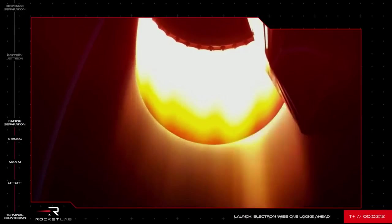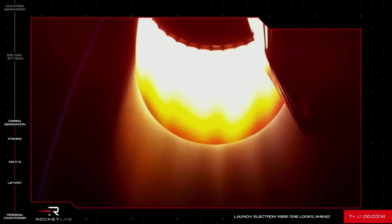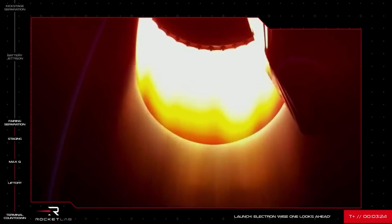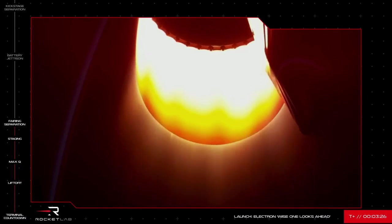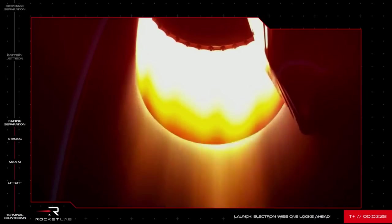Fairing jettison succeeded. Stage two propulsion. And there it is. You can see the payload fairing tumbling away on your screens now. The NRO payload is now exposed to space in preparation for payload deployment later in the mission. This fairing will burn up as it re-enters the atmosphere, while the second stage continues on.